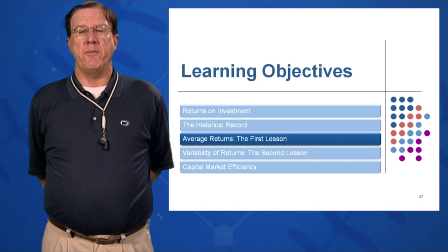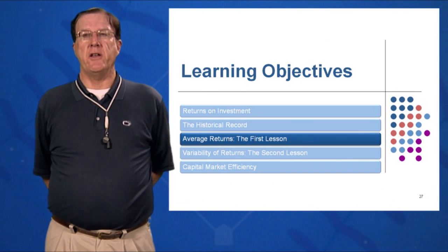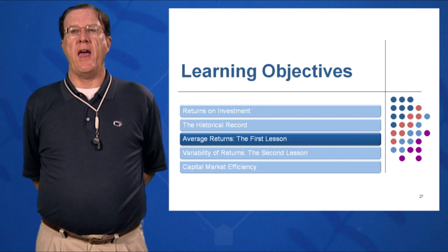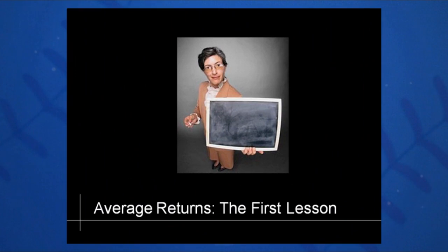In Session 12, Learning Objective 3, we're going to look at average returns — what has happened on average over the last 85 years in the stock markets to small company stocks, large company stocks, government bonds, corporate bonds, and treasury bills.